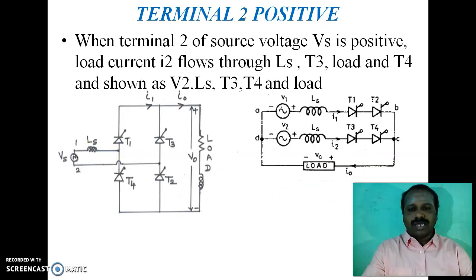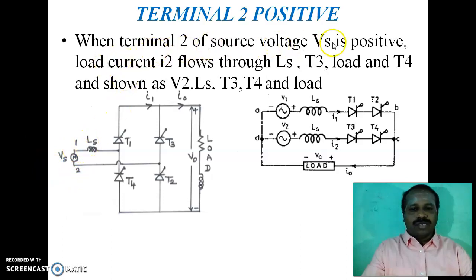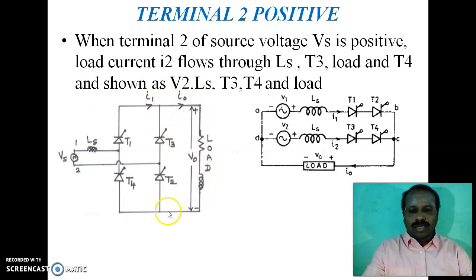Next, we consider terminal 2 as positive. When terminal 2 becomes positive, terminal 1 becomes negative. When terminal 2 of source voltage Vs is positive, load current I2 flows through Ls, then T3, then the load, and then T4. This is shown in the equivalent circuit as V2, Ls, T3, T4, and load.